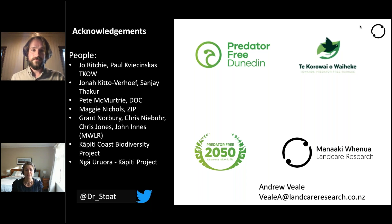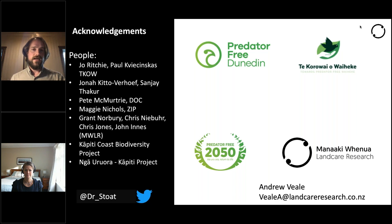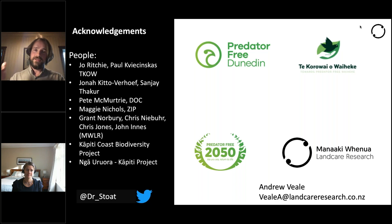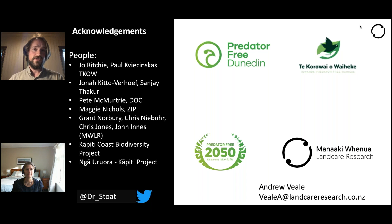Terry Webb has asked about the effectiveness of A24 traps versus DOC 200s. I only have anecdotal evidence, but from what I've heard from Zip and others, there are probably a higher number of stoats that avoid A24s than avoid DOC 200s — though there are stoats that avoid both. A24s probably have a place, and maybe some stoats will go into an A24 and not a DOC 200. But my understanding is that DOC traps have a higher kill rate if you can check them regularly and have nice fresh lure.